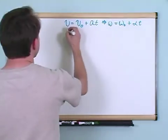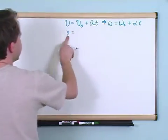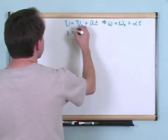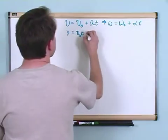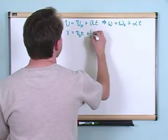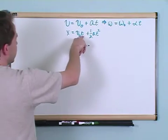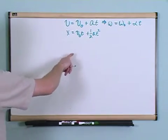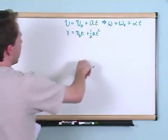Now, you also learned an equation, way back when, that the distance that something has traveled is v naught times t, plus one half times a times t squared. And this is something we've already learned, initial velocity, the time that it's traveled, one half times the acceleration times time squared, okay?